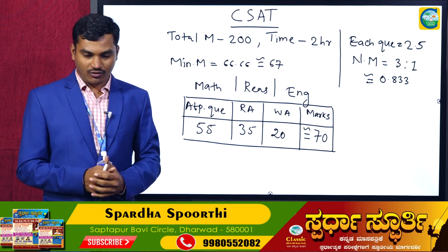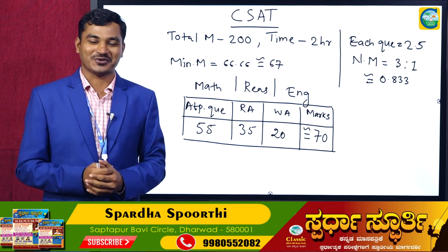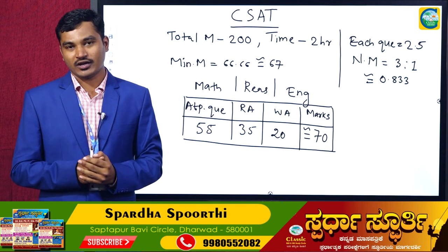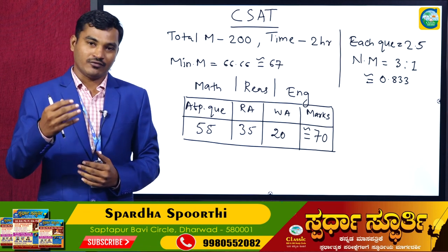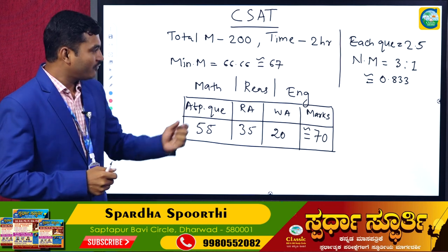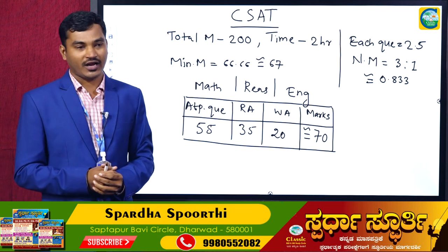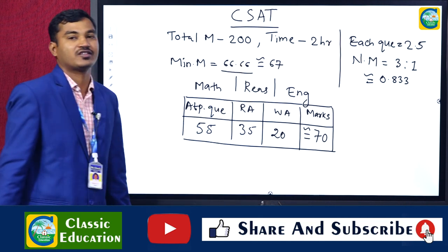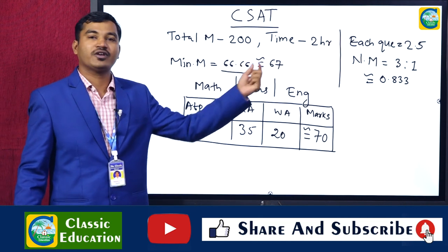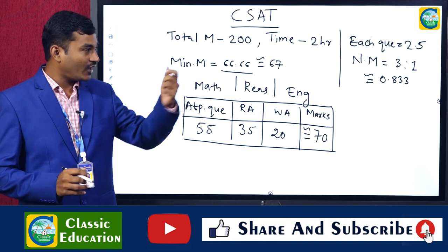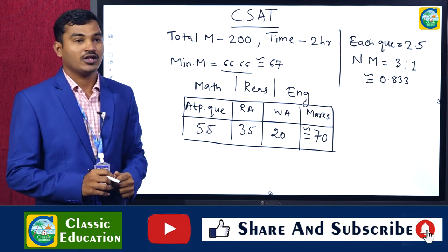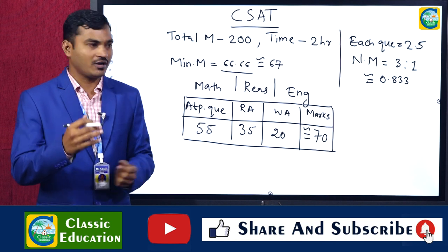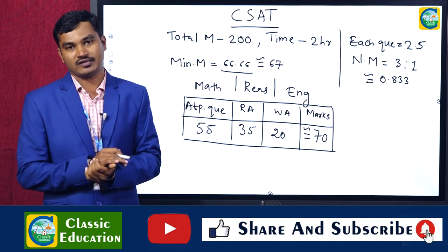Regarding minimum qualification: even if you take out the total marks, it is not going to give any additional boost for your final selection, but we have to qualify this exam. To qualify, we have to score 66.66 marks — you can round it to 67 — but since each question is 2.5 marks, it will be around 67.5. The minimum is 66.66 marks.